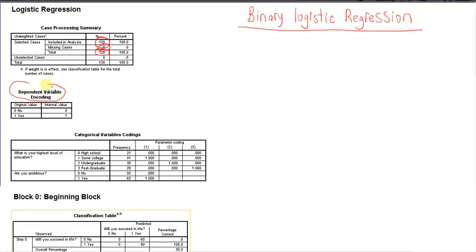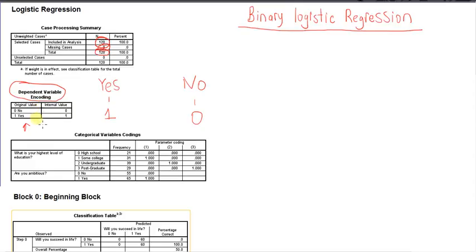The next table is Dependent Variable Coding, which shows how SPSS has coded your dependent variable. I had yes and no for our dependent variable. You should generally code no as zero and yes as one. If you haven't done it that way, SPSS will do it for you. You can see in the original value column it has zero for no and one for yes, because that's exactly how I coded the dependent variable in the first video.